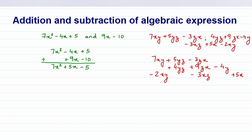So we have written all three expressions properly with like terms aligned. Now you can see there are empty spaces. You can write 0 in place of empty spaces if it's confusing you, or you can just leave it and add up. I'll write the zeros to remove any confusion. So we have filled all the gaps. Now we have arranged all the like terms and we have to add them.